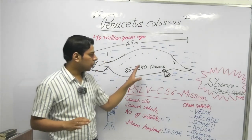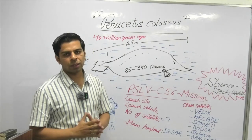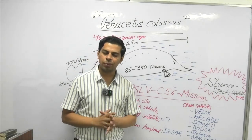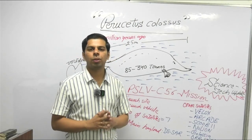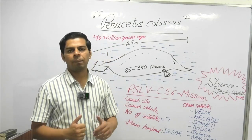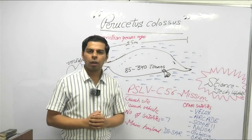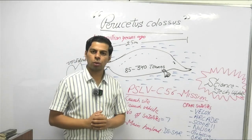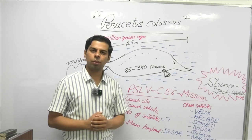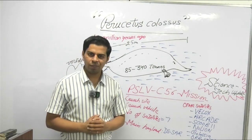I hope the basic nitty-gritties of these two basic themes, Pyrrhocetus Colossus and PSLV C-56 mission, are now clear in your mind. Make sure you update them in your class notes for better revision and linkage with the static themes. If you have any specific doubt which has not been addressed in this lecture, feel free to connect, we will take up your genuine queries. Have a nice day. Thank you very much.